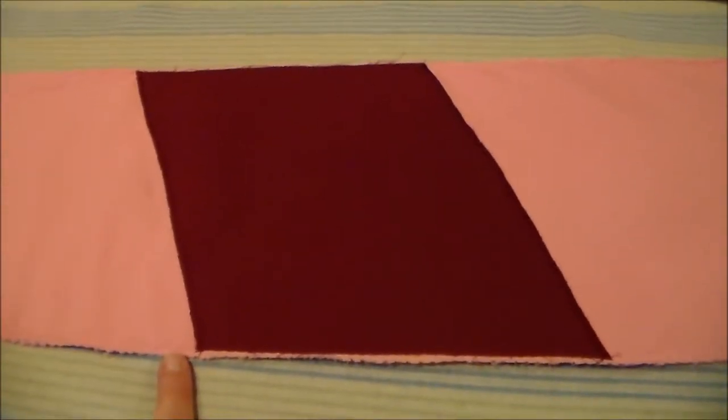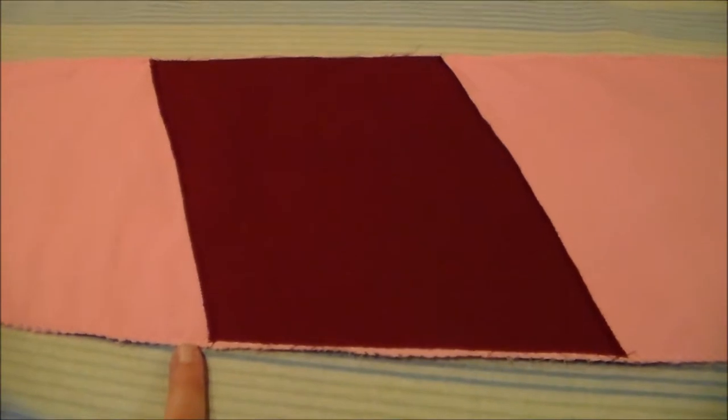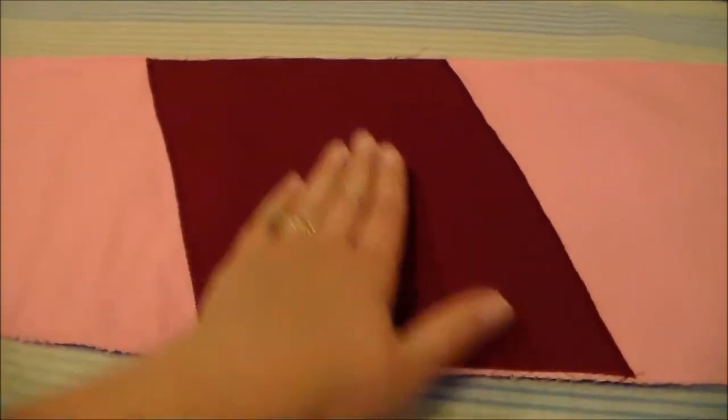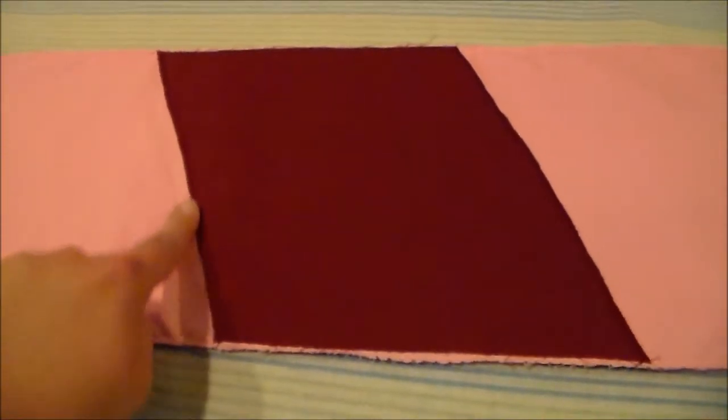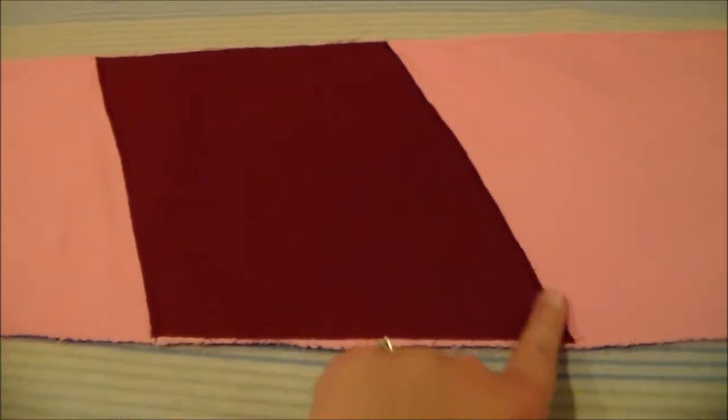Next, cut the red strip out of your deep red fabric, and then heat and bond it and zigzag along the edges, just like you did for the bats.